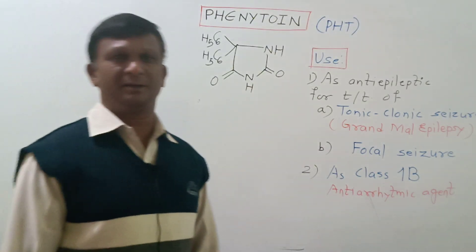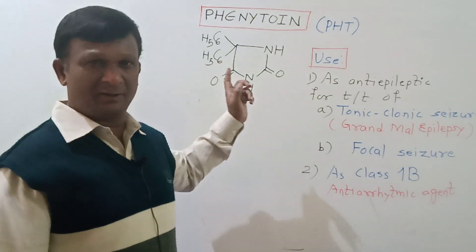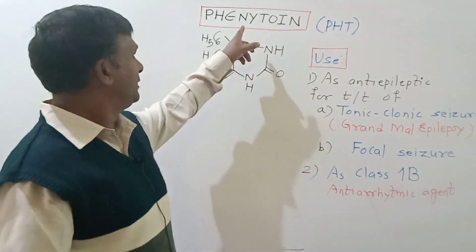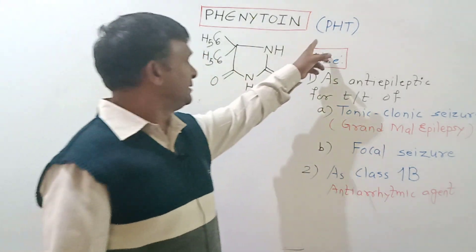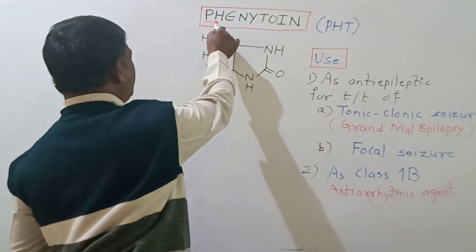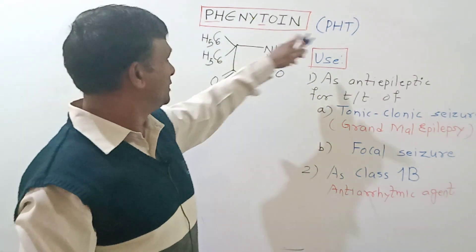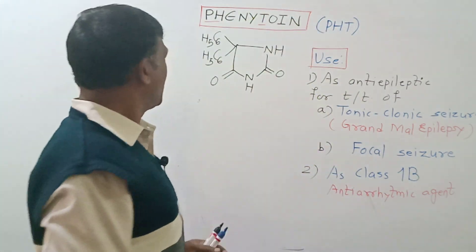Hello dear students and friends, our today's topic is a medicinal compound called phenytoin, which is abbreviated as PHT. PH is taken from 'phenyl' and T from 'toin', so it is PHT. This is the structure for phenytoin.